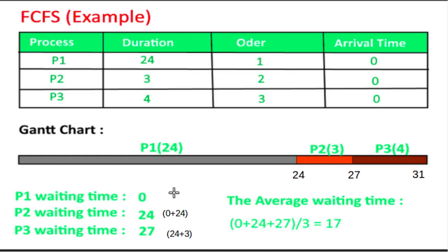P1's waiting time is 0. P2's waiting time is P1's waiting time plus P1's burst time, which is 0 plus 24. P3's waiting time is 0 plus 24.